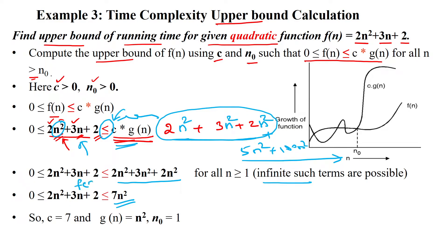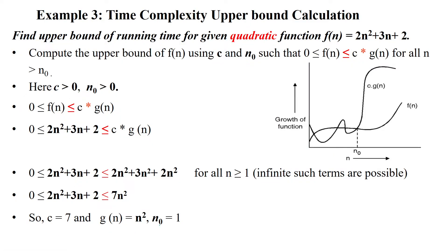So f(n) ≤ c·g(n), where c = 7 and g(n) = n². Now we substitute n₀ = 1, since n₀ is always greater than 0. Substituting 1 gives 2 + 3 + 2 = 7, which is less than or equal to 7·1² = 7. Both sides are equal, confirming this is the starting point at n₀ = 1.